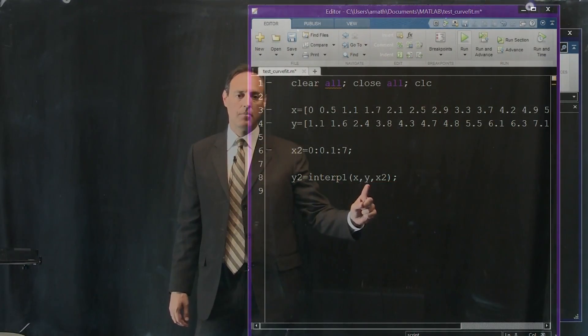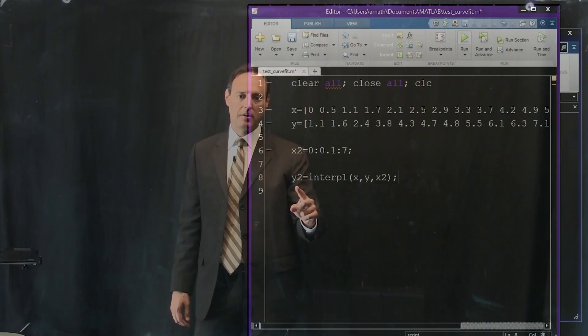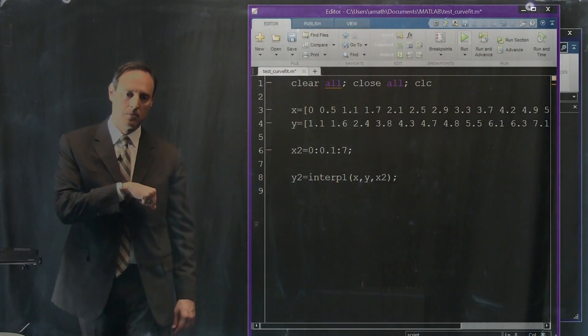Give me your data, the x, y points, tell me where you want to fill in data, so this is vector x2, and I'll give you back the vector y2 with all the interpolated values.